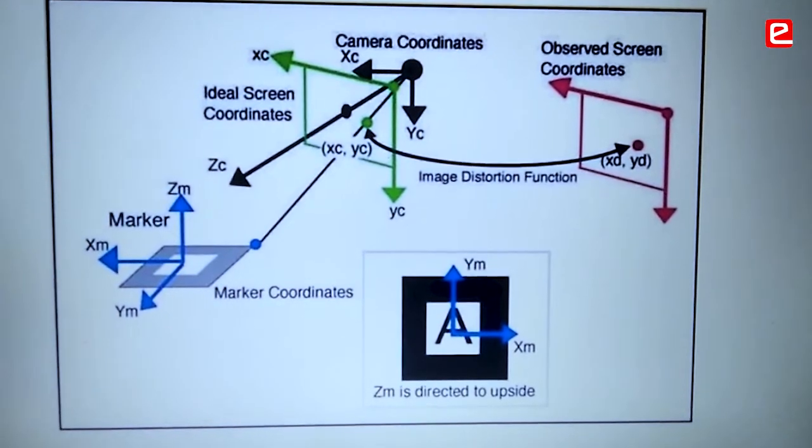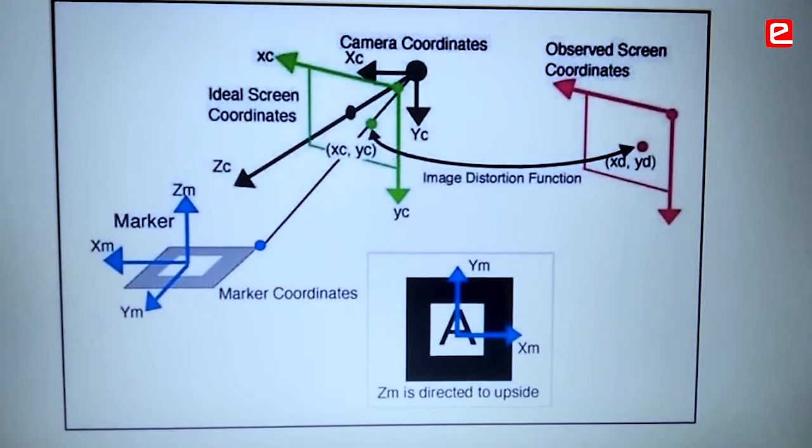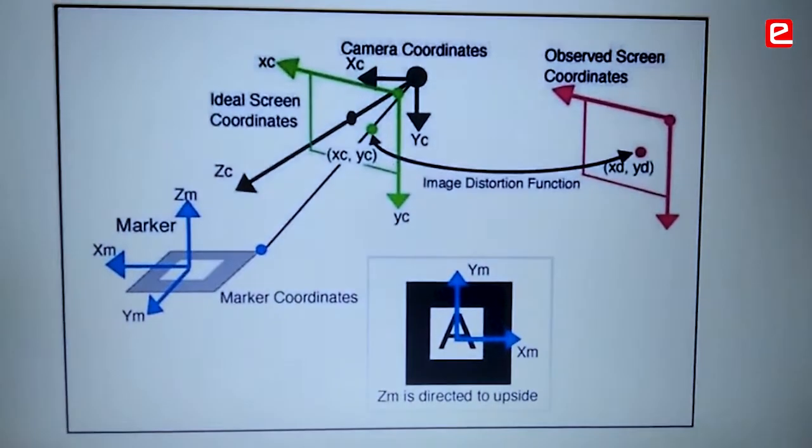And here you can see in the picture what the rvec and tvec are. Camera plane is actually written by marker plane using rvec and tvec.